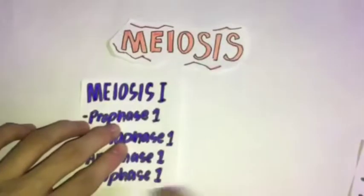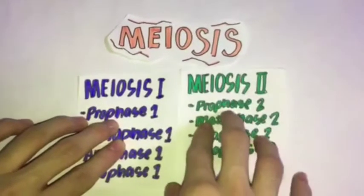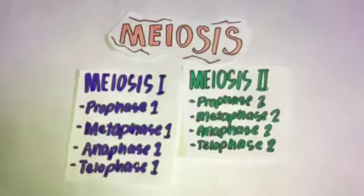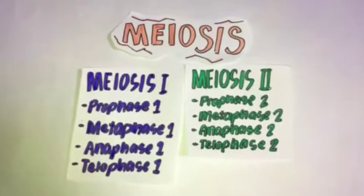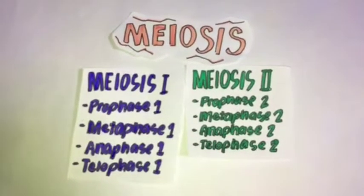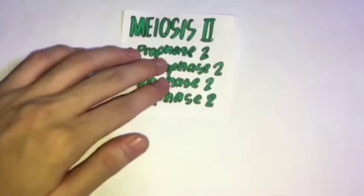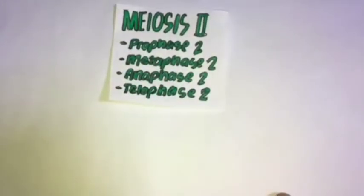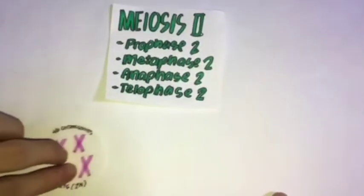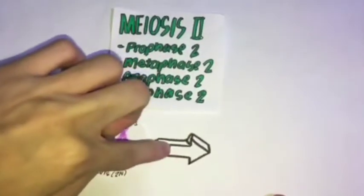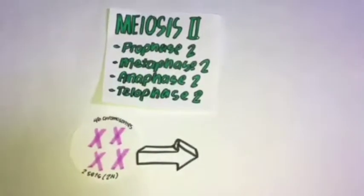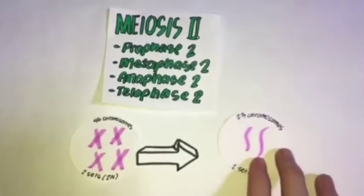After meiosis 1, the cell will proceed to meiosis 2, in which the two cells produced during meiosis 1 then go through meiosis 2. Meiosis 2 is just like mitosis, and the cells undergo another division in order to turn the diploid cell into a haploid cell. There should be a reduction in chromosome number, and no additional replication occurs.